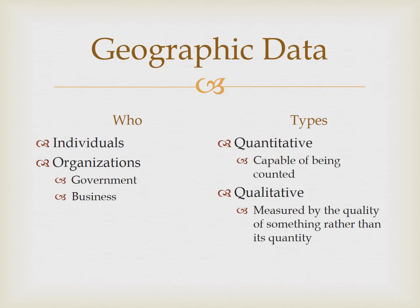Now that we know that a wide variety of people will collect and use geographic data, let's understand two broad categories of this data. Quantitative data is data that can be measured by numbers, like the number of bushels of corn grown in Iowa. The U.S. Census Bureau counting up the population of the United States every 10 years is an example of quantitative data. The data is a quantity.